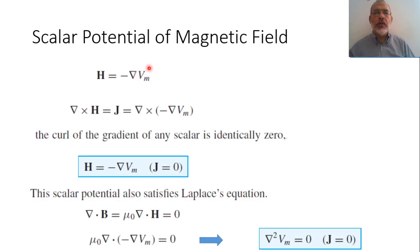Vm is the scalar potential of the magnetic field. For the case of the electric field, we have only a scalar potential, so we didn't specify 'scalar potential of electric field' — we just said 'potential of electric field.'